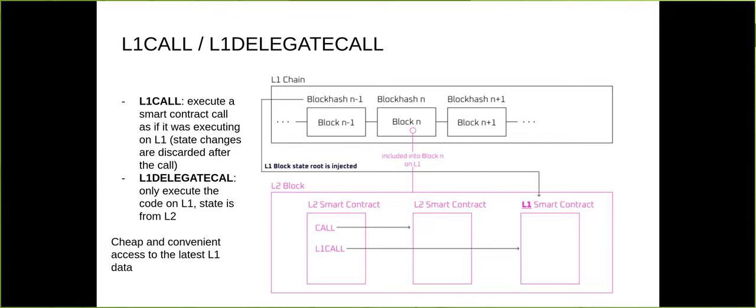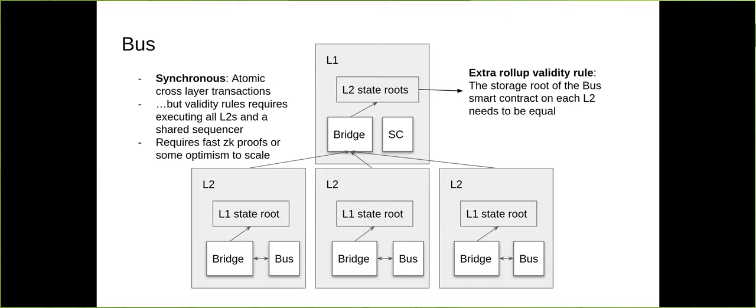Q: Do L2s with a shared sequencer already have atomic transaction inclusion? A: At this point, none do. Espresso is just a shared sequencer without guaranteed atomic inclusion, unless you use a workaround like a bank system, but that has extra capital requirements. This design — shared validity — goes further because rollup validity depends on the validity of other rollups, requiring matching state roots.